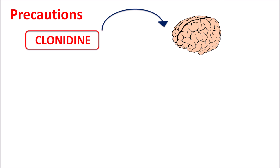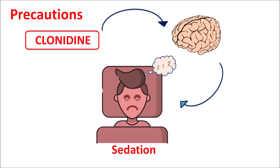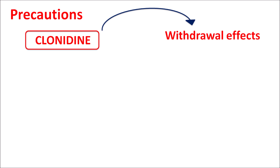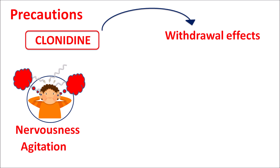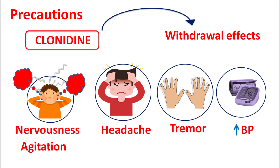Clonidine can act on the brain to reduce excitatory neurotransmission, producing sedation and reducing the ventilation rate, resulting in respiratory depression — these effects are more pronounced at high doses. Another important precaution is the withdrawal effect. When this drug is suddenly withdrawn, symptoms opposite to its pharmacological actions can appear: increased nervousness, agitation, headache, hypertensive rebound, and even persistent tremors. All these symptoms may be fatal, so this drug should not be suddenly withdrawn. The dose should be slowly tapered over two to four days to reduce withdrawal effects.